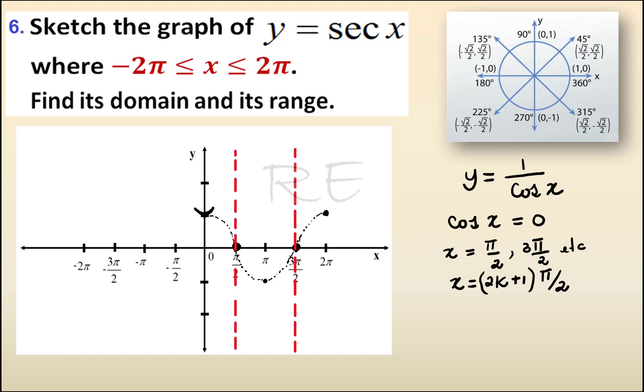Cosine 0 is equal to 1, so (0, 1) is on the graph. Cosine π is equal to negative 1, so (π, -1) is on the graph. And cosine 2π is equal to 1, so (2π, 1) is on the graph.